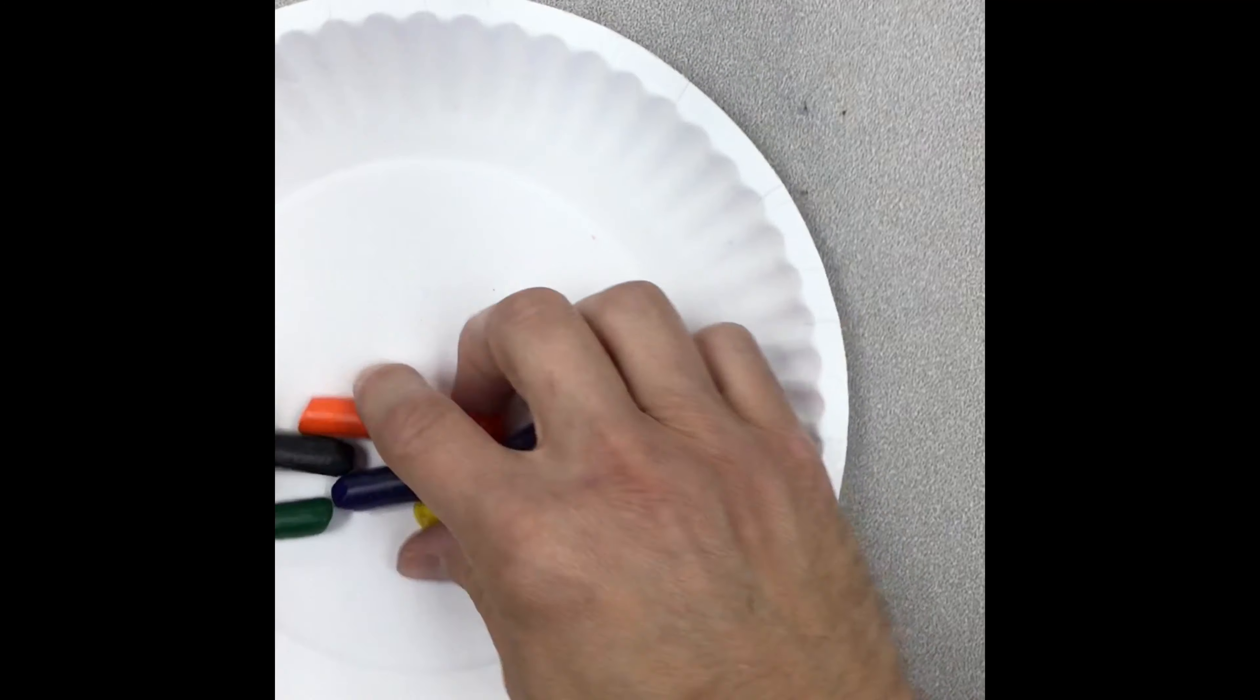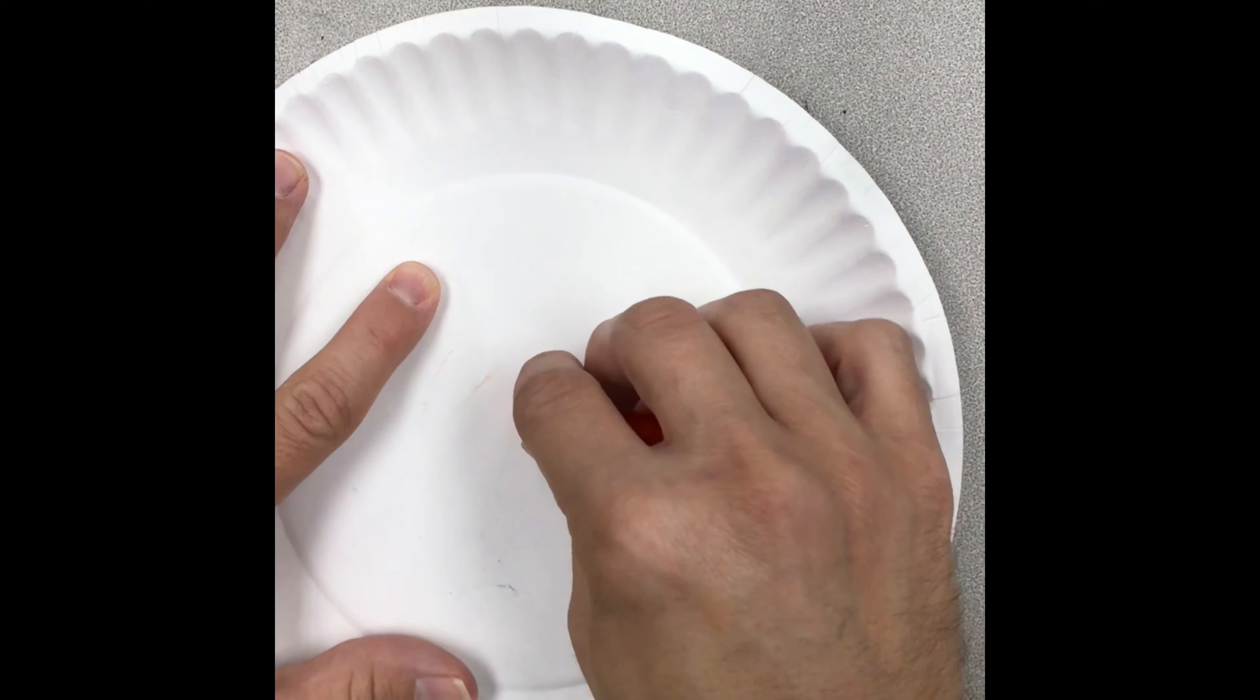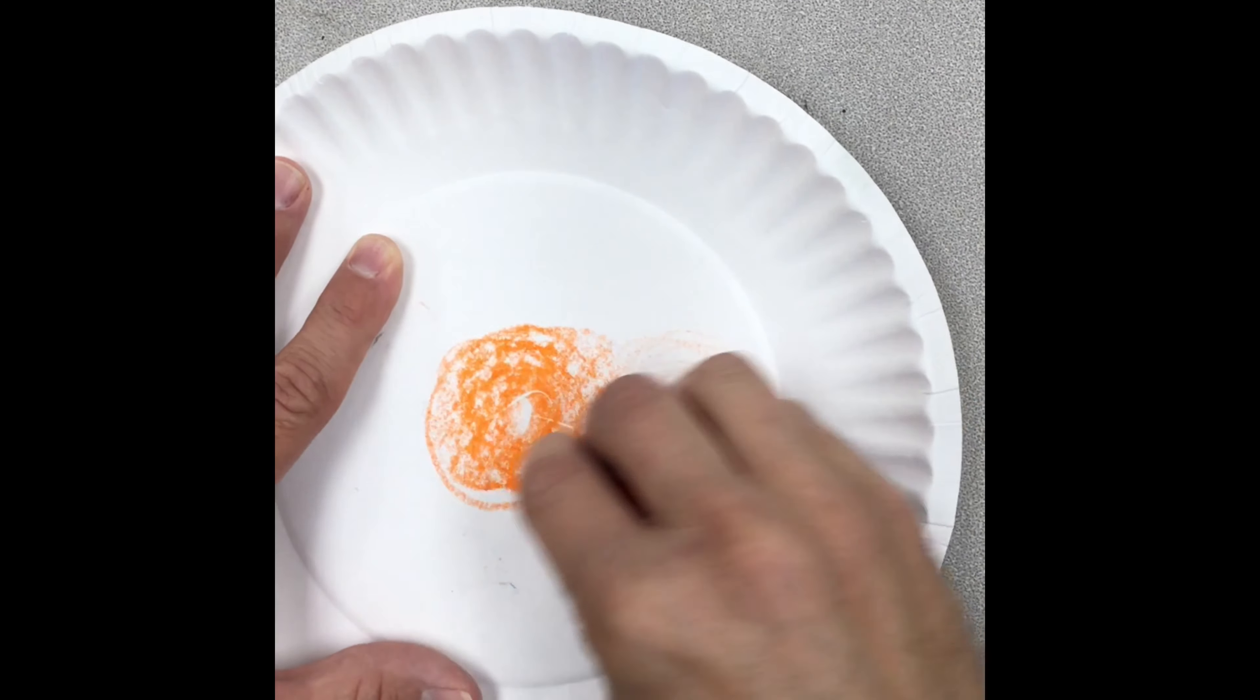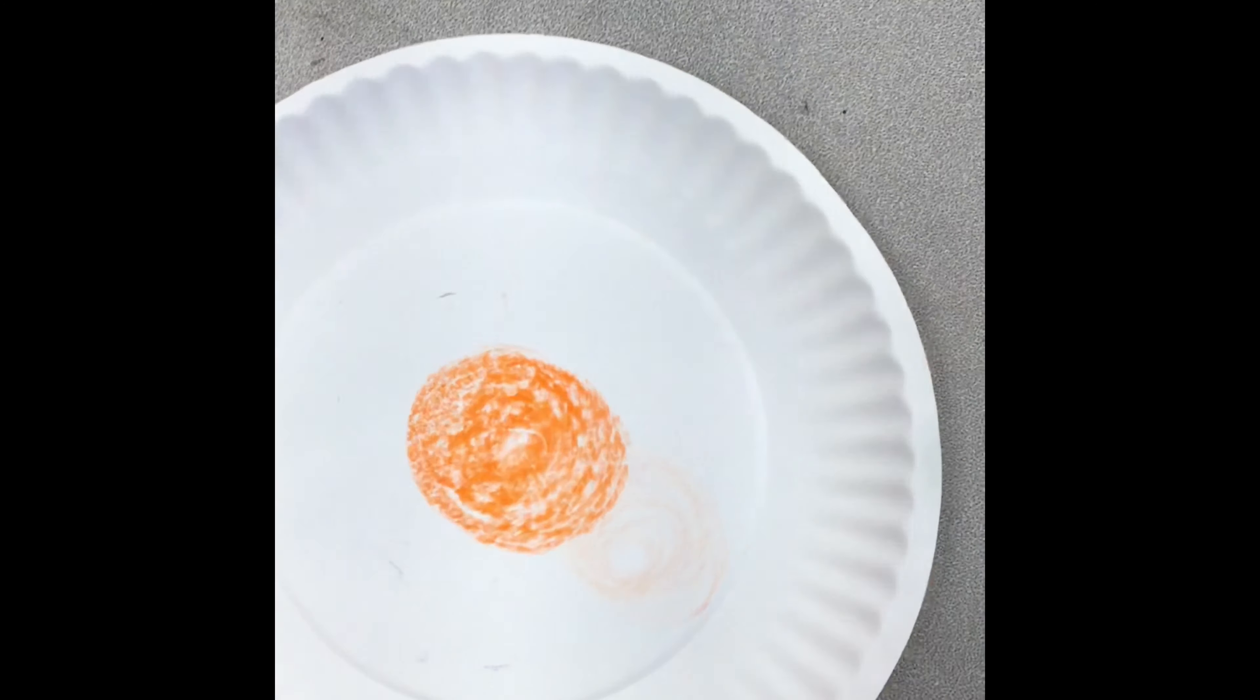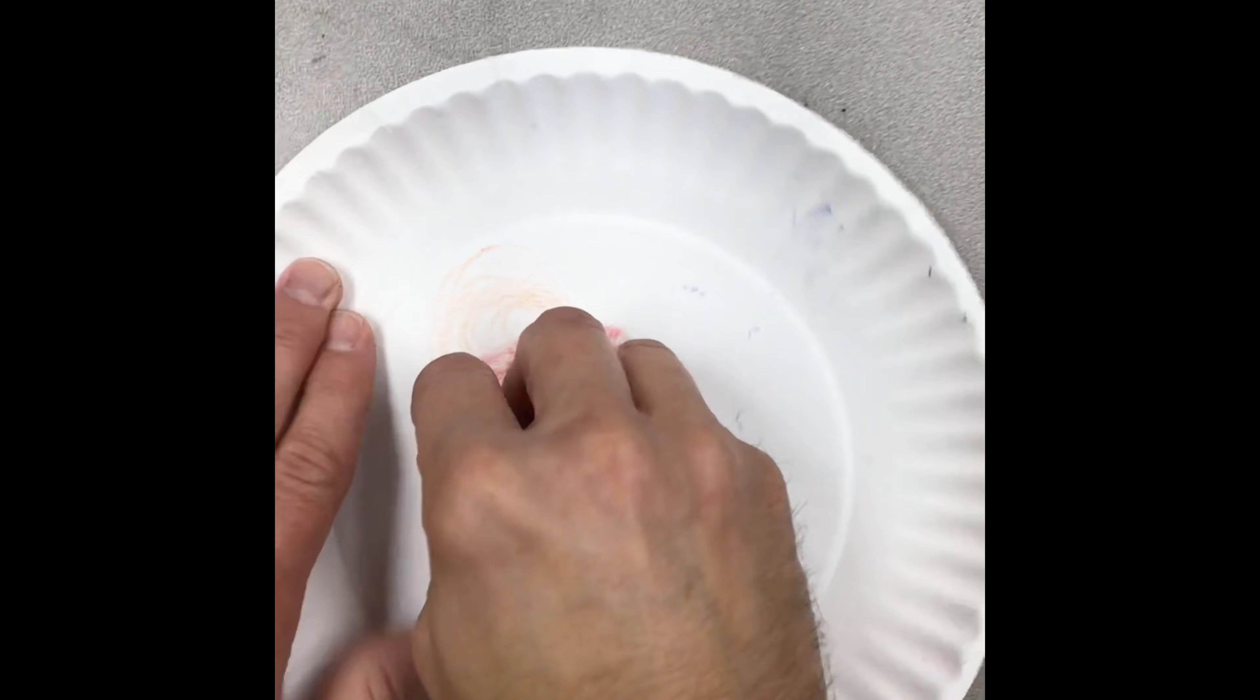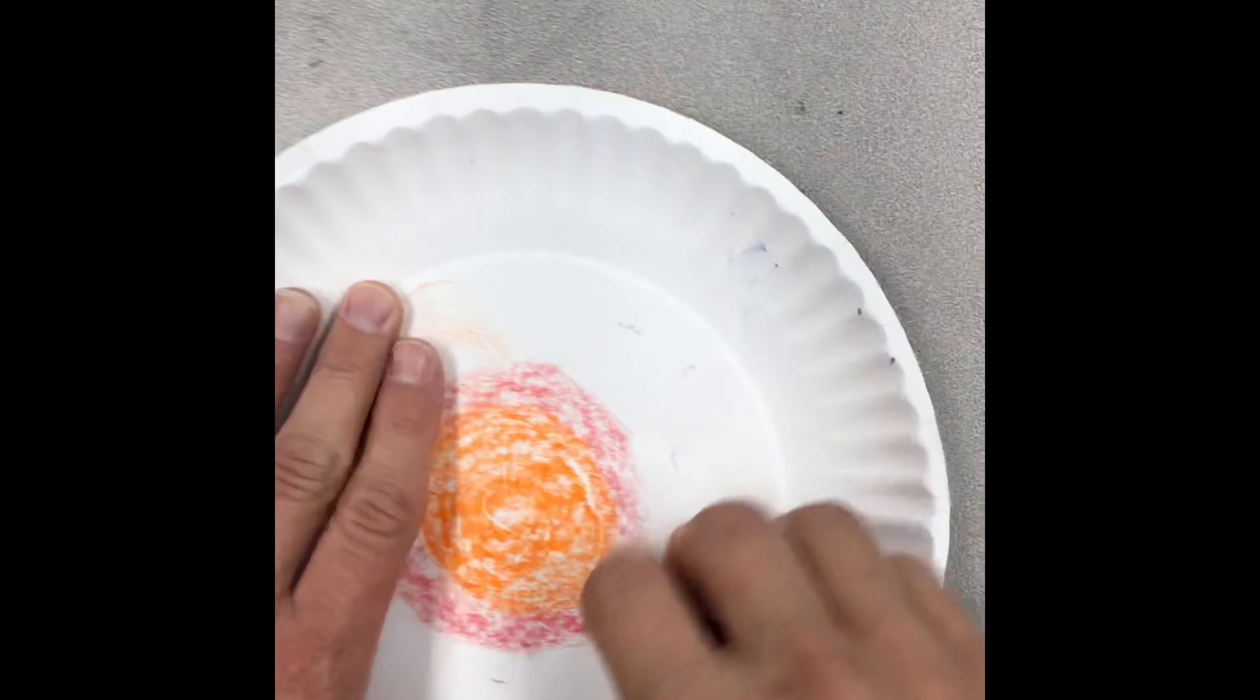Using some crayons with no paper, we're going to color in our paper plate. We're going to start in the middle of the plate. Now as you're coloring, think about what you want to represent in your collar necklace. I started off with orange, so that means I have some hospitality. I'm using some red, so maybe I've got some bravery and some strength.